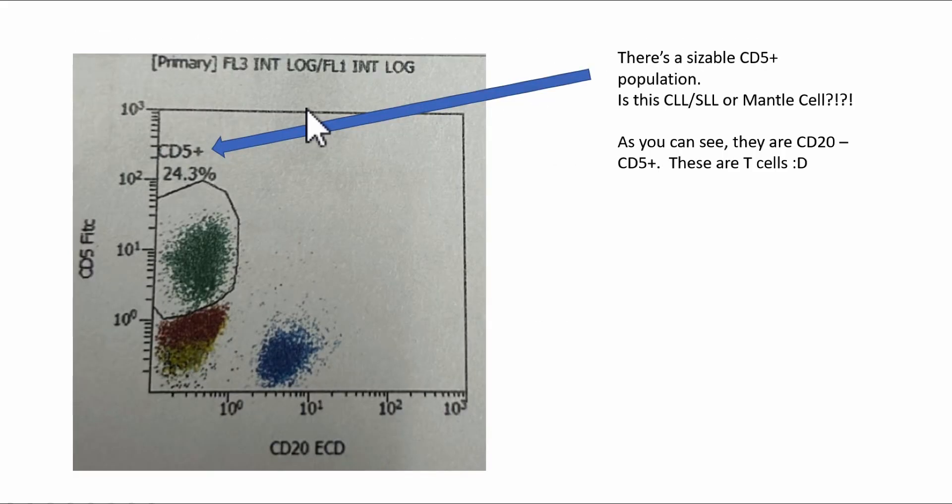Now, that being said, you have a CD5 positive sizable population, that's 24.3%. So is this concerning for CLL-SLL or mantle cell lymphoma? No, not necessarily, because on the x-axis, you have CD20. And these cells are negative for CD20. These cells are the B lymphocytes, and they're CD20 positive, and most of them are CD5 negative. You have to remember that traditionally CD5 positive, CD20 negative cells are T lymphocytes.